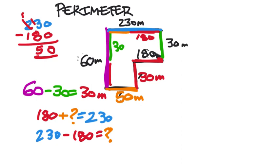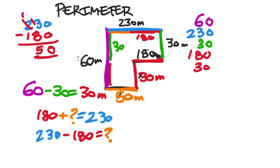Now that I have all the side lengths of this composite shape, I just add them all together. Starting with the left purple side — 60 — then the top 230, then 30 on the right, then the first red side 180, the other red side 30, and the orange side 50. If you need to, you can add two at a time: 60 plus 230, find that sum, then add 30, and so on. That's totally fine.